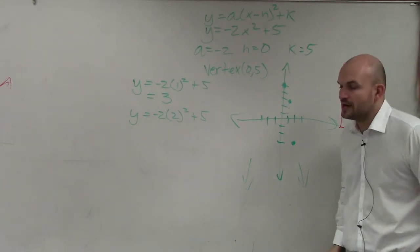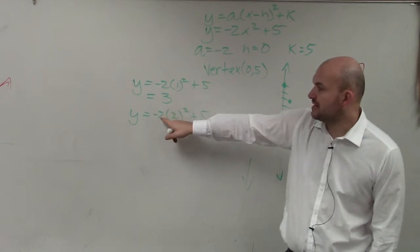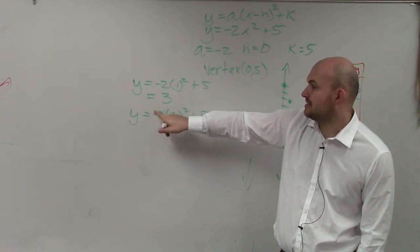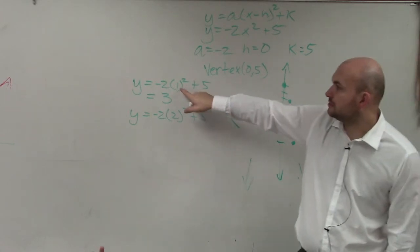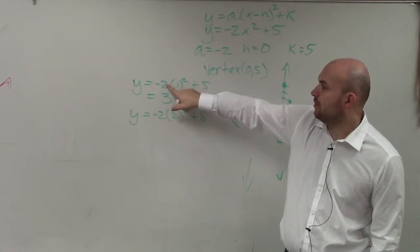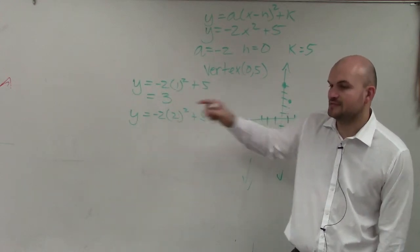2 squared is 4. 4 times negative 2 is negative 8. Negative 8 plus 5. 1 squared is 1. 1 times negative 2 is negative 2. Negative 2 plus 5 is positive 3.